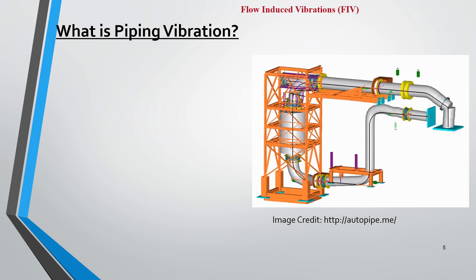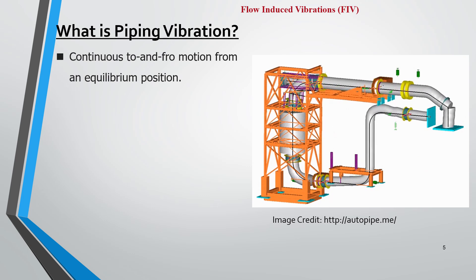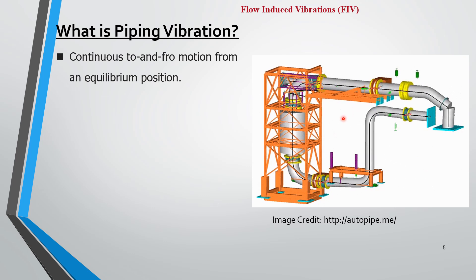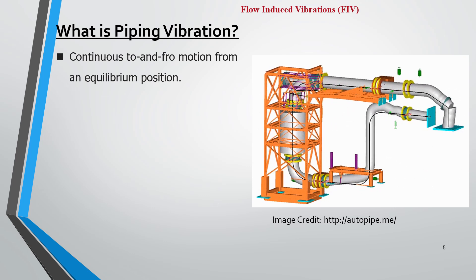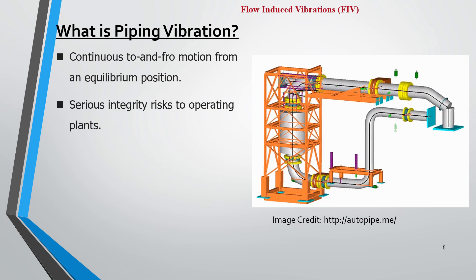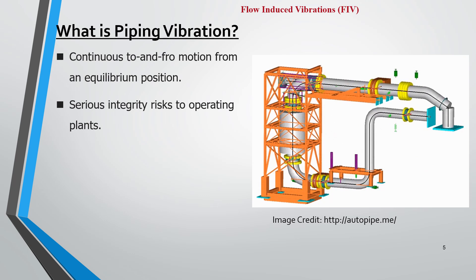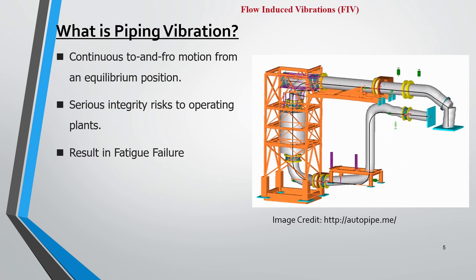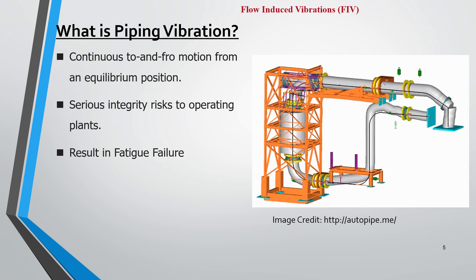Piping vibration can be defined as the continuous to-and-fro motion from an equilibrium position — it is an oscillatory motion. As seen in the image, the piping system is vibrating with respect to an equilibrium position. In an operating plant, this type of motion creates a serious integrity risk and, if it continues, will result in fatigue failure after a certain number of cycles.